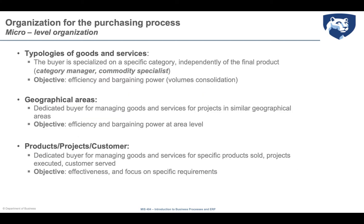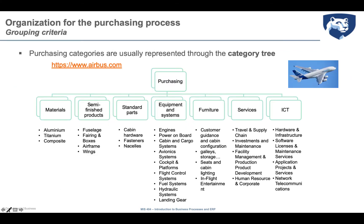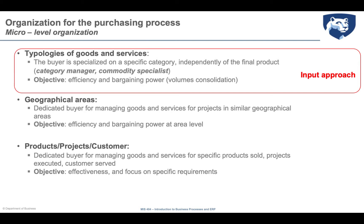Since purchasing buys different items, these are usually managed through a cluster approach relying on different purchasing categories represented in the category tree. The first decision to take is how you specialize resources in the purchasing department. The first approach is the so-called input approach, where people are specialized by typology of goods and services — they are specialized by categories. In the purchasing department of Airbus, you have some people dedicated to buying materials, some dedicated to semi-finished products, some to standard parts, some furniture, some services, and some ICT.